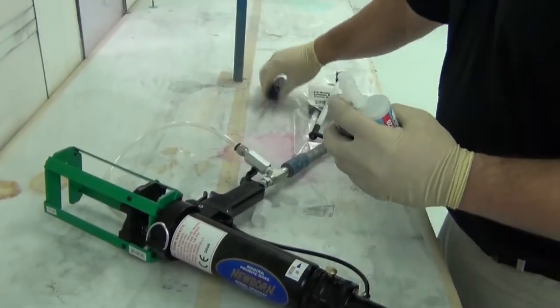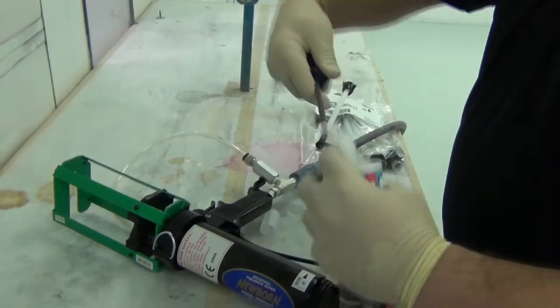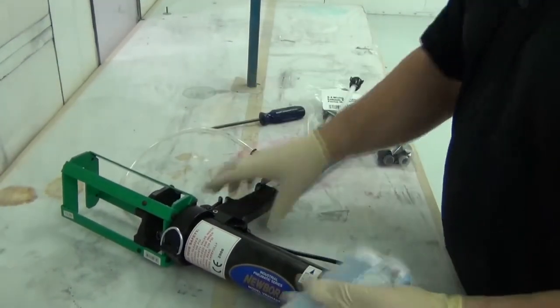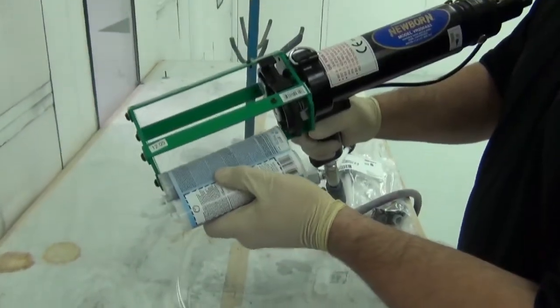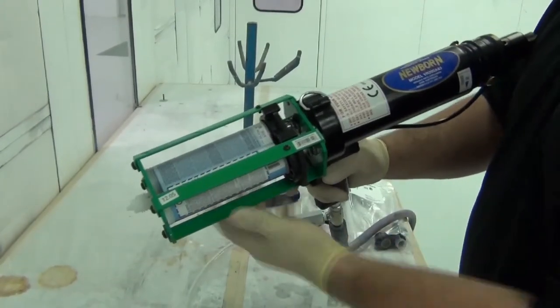With the cartridge, just a simple flathead screwdriver, pop that right off, then you load the cartridge into the gun.